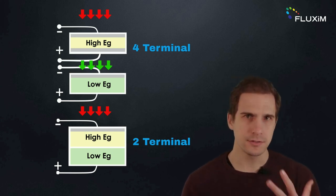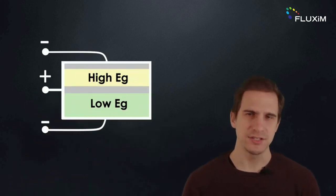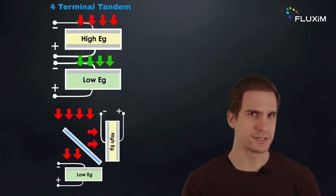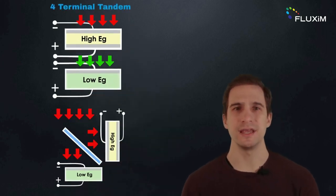A third contact variation that is less known, but is catching up, is the three-terminal tandem. In a four-terminal tandem solar cell, the two subcells are fabricated independently and are electrically isolated from each other.